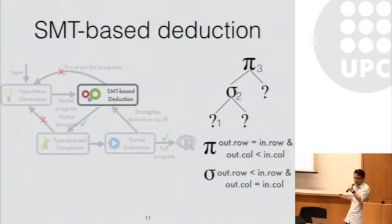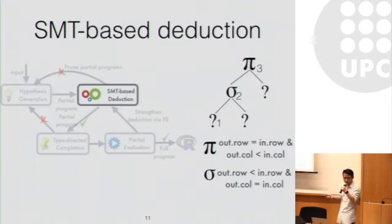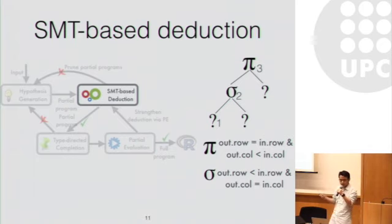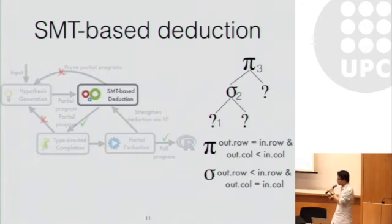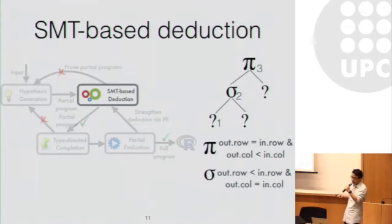The specification says that when you perform a projection on a table, the number of columns decreases whereas the number of rows remains the same. You get a similar specification for selection. Those specifications over-approximate the behavior of each component. Once we have specifications for each component, we generate the specification for the current hypothesis.